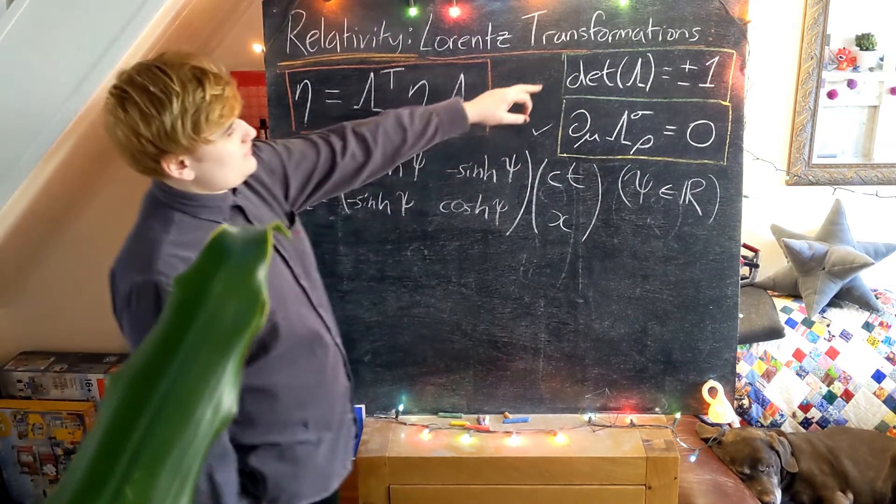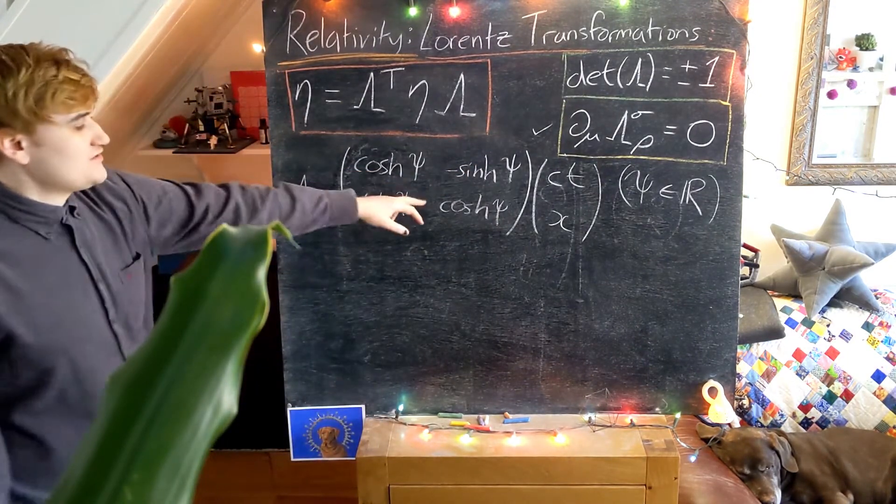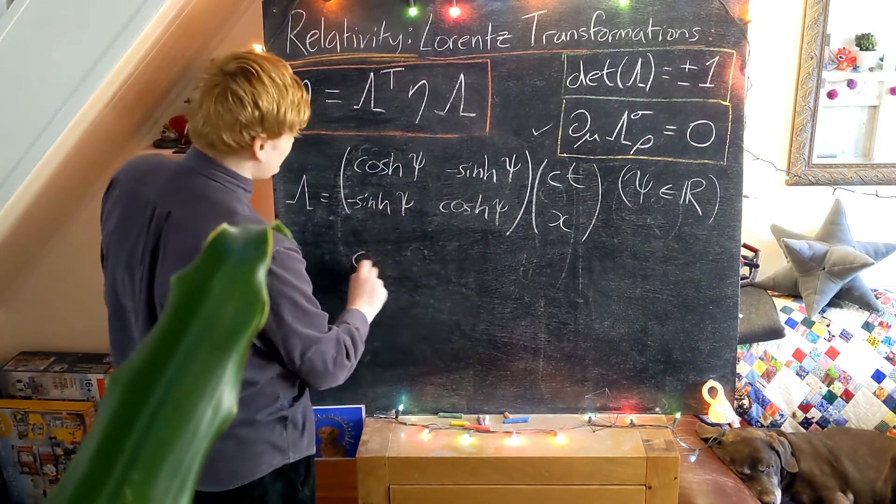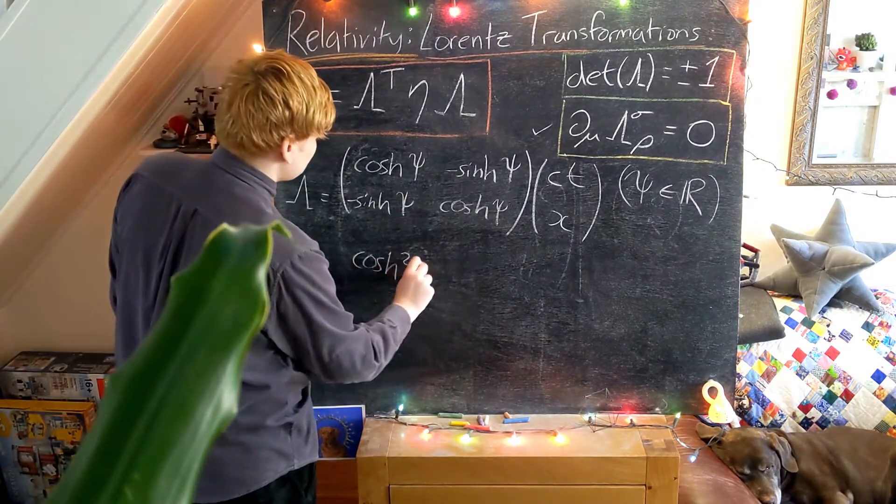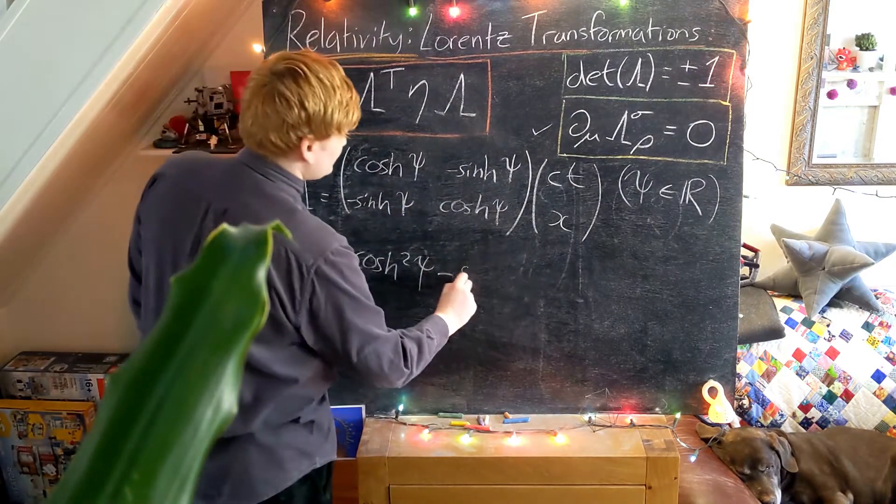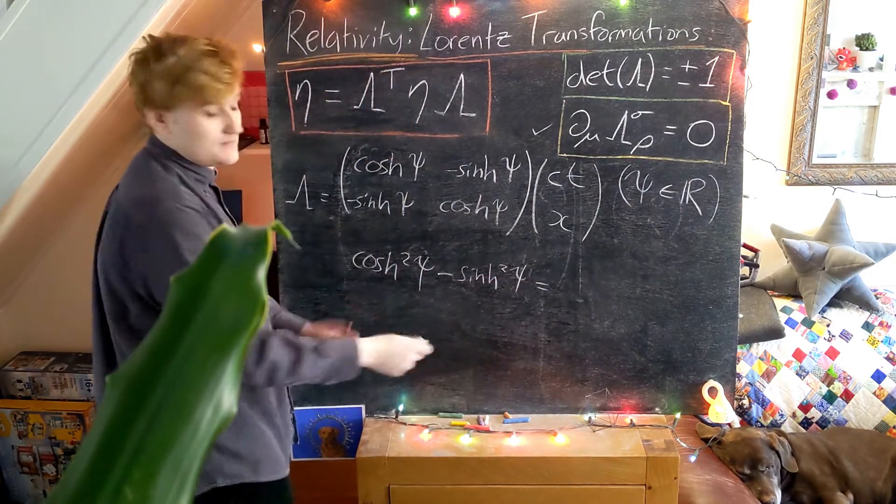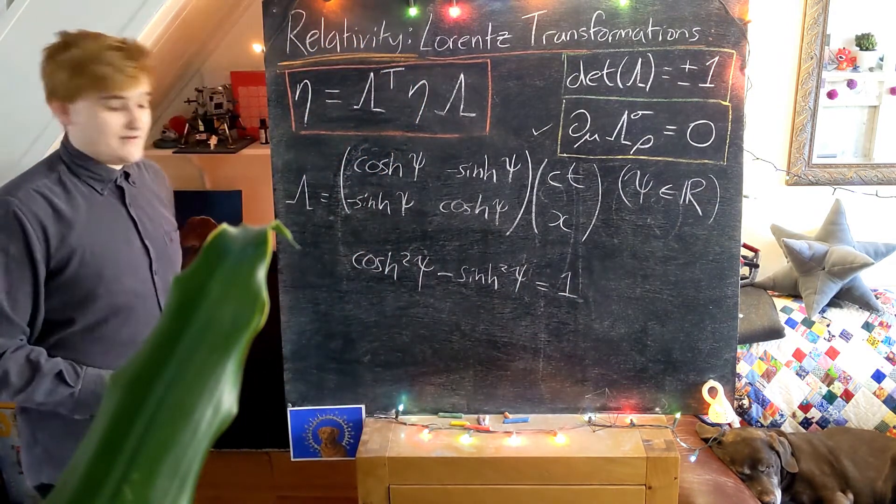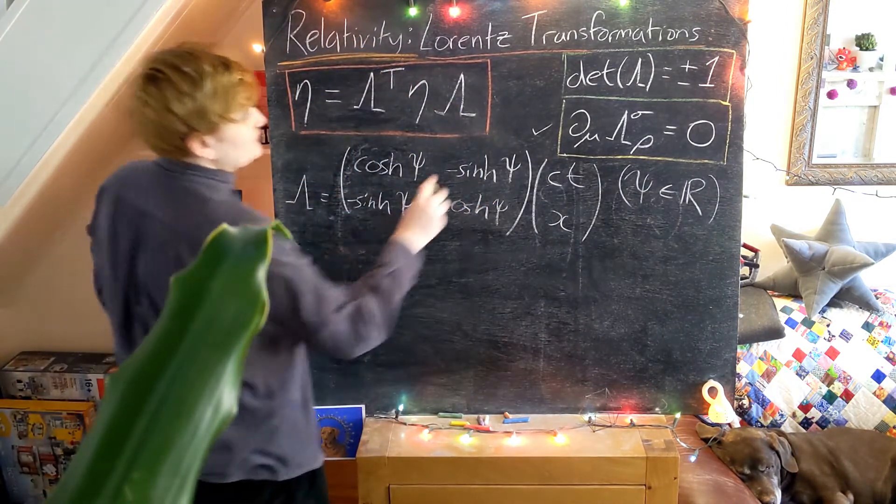And now let's check the determinant. Just simply calculate the determinant. We're going to have cosh squared minus sinh squared, which is 1. Just simply an identity. And so yes, the determinant is plus 1.